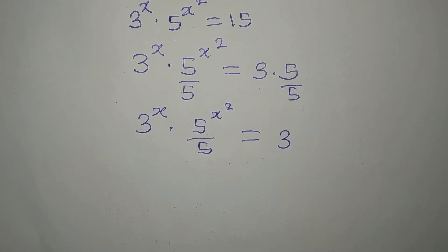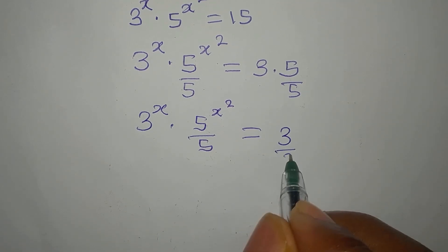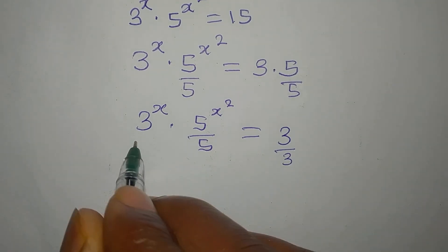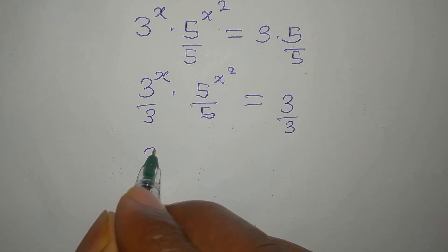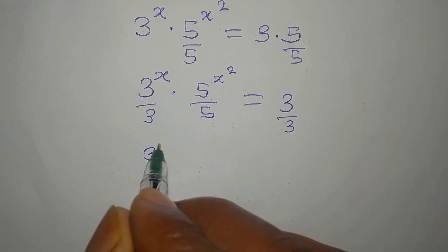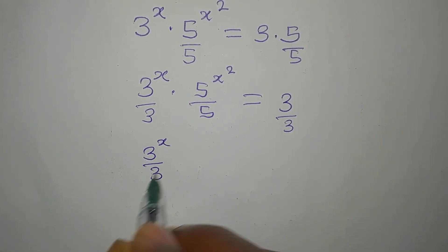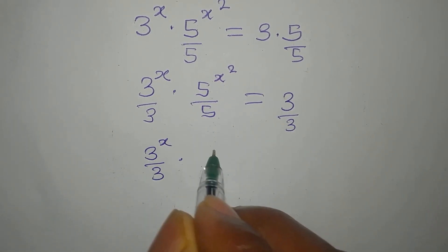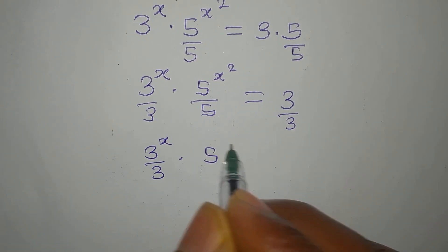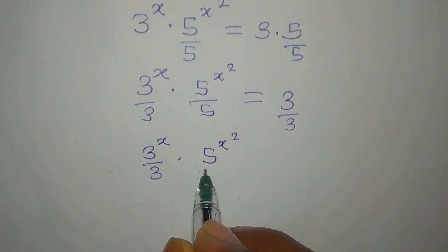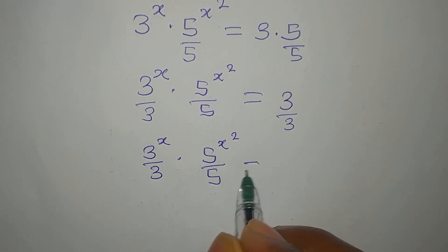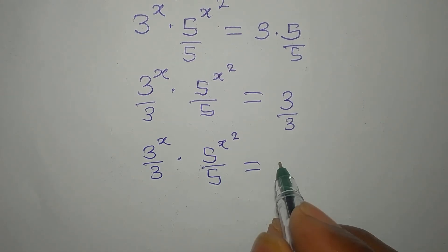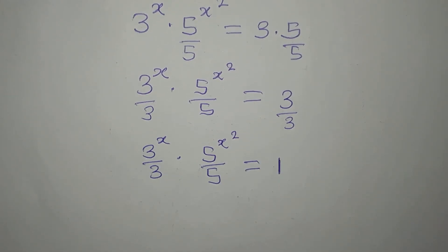The next thing I want to do is divide both sides by 3 again. This time I have 3 to the power of x over 3, times 5 to the power of x squared over 5, equals 3 over 3, and that is 1.